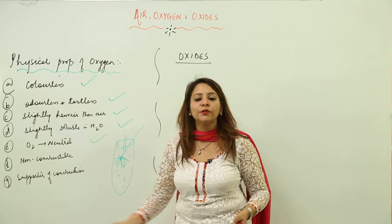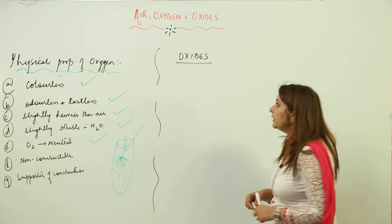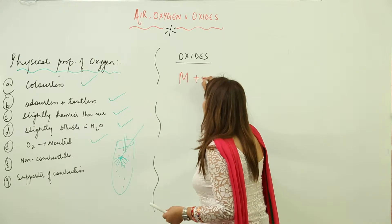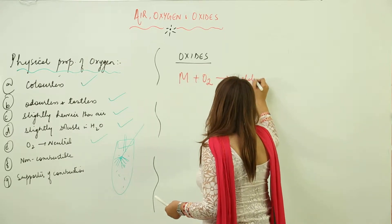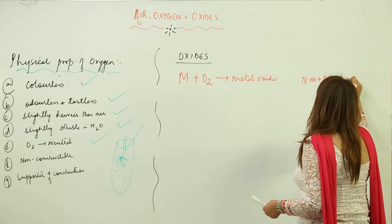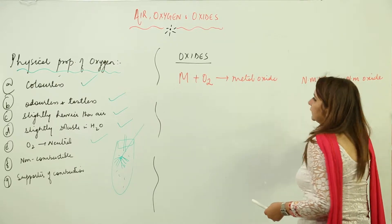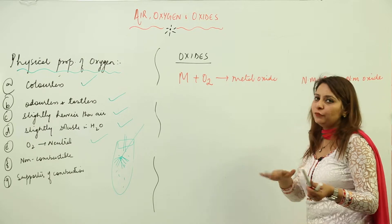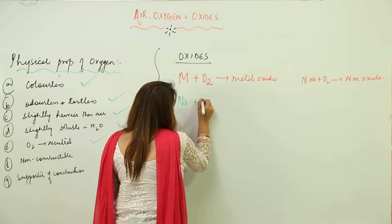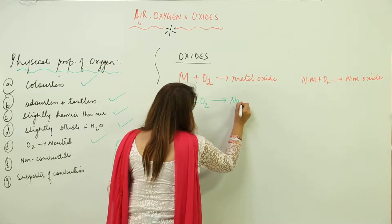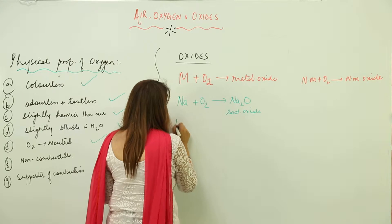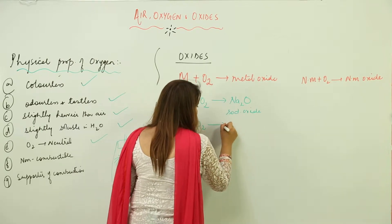Moving on to oxides — oxides are formed when a metal reacts with oxygen to form a metal oxide, and also when a non-metal reacts with oxygen to form a non-metal oxide. So we can have a metal oxide and a non-metal oxide. For example, sodium plus oxygen forms Na2O, that is sodium oxide.